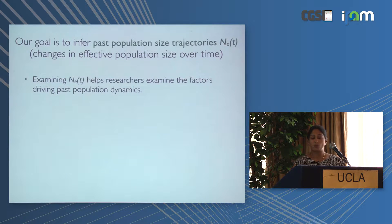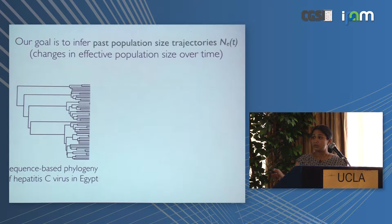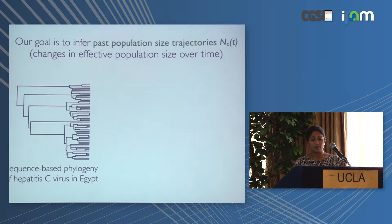To show why a population size trajectory is an interesting parameter, I'll tell a story about Hepatitis C. This is a sequence-based phylogeny of Hepatitis C in Egypt — a popular dataset in a field called phylodynamics. It's just a phylogeny built from distances among these sequences, and from it we can conduct inference of Ne(t). I'll show what that looks like and then spend the first half of the talk explaining how you might do that.